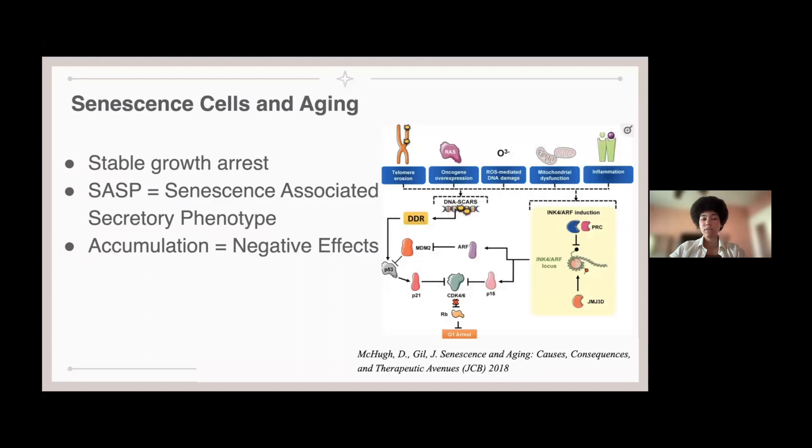However, they also have a negative effect by suppressing cytotoxic T-cell responses, which we use in our immune cells. Senescence cells release the senescence-associated secretory phenotype, and this helps maintain senescence.